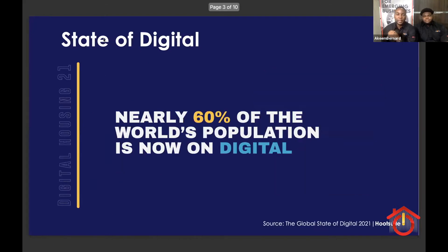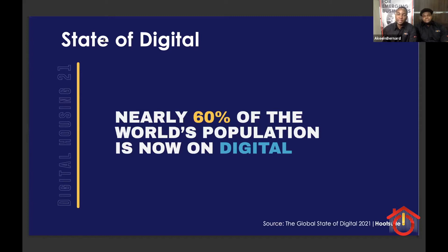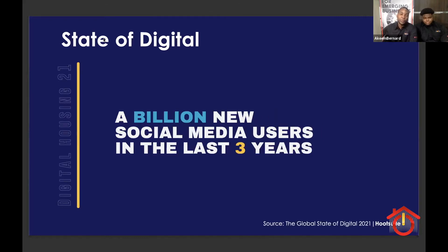Let's get started with the state of digital. Currently, nearly 60% of the rural population is recorded to be on digital platforms in some form or shape — from social media to other digital platforms. This is sourced from the latest study from Hootsuite, the Global State of Digital 2021. Also, a billion new social media users have signed up within the last three years.